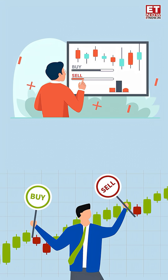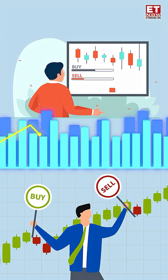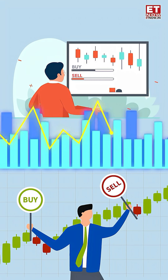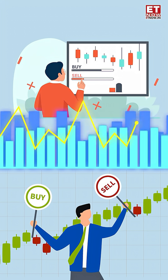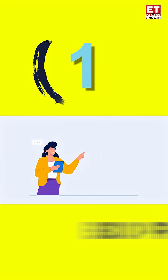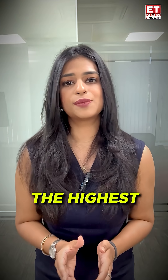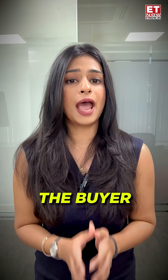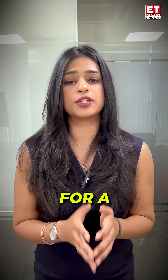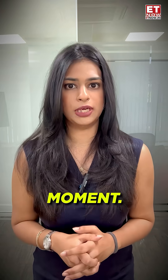Bid and ask are referred to as the pulse of the stock market, revealing who wants to buy and who wants to sell at what price. First, the bid price — it is the highest price that the buyer is currently willing to pay for a security or a stock at a given moment.